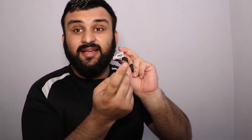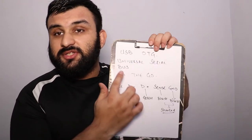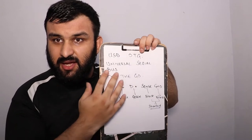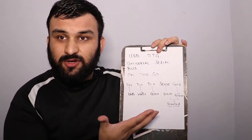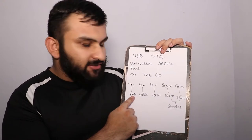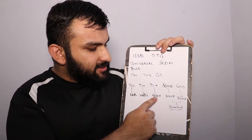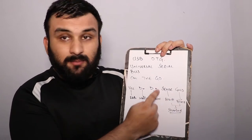On the other side it is USB-A. So how do they work? USB OTG — or Universal Serial Bus On The Go — as I explained in the previous video, it has a VCC, a data minus, a data plus, and the ground.